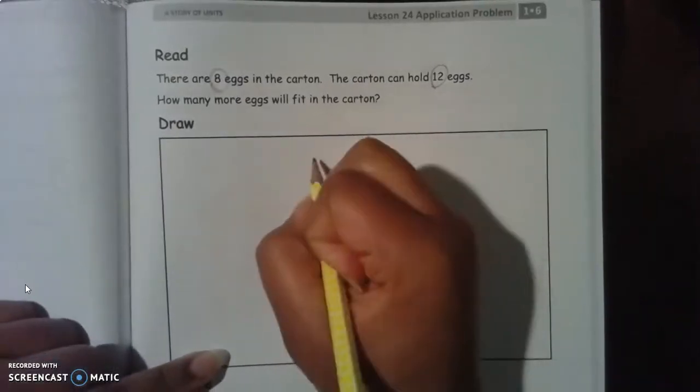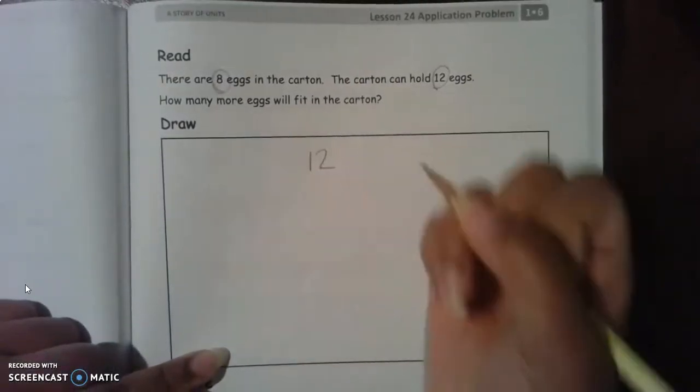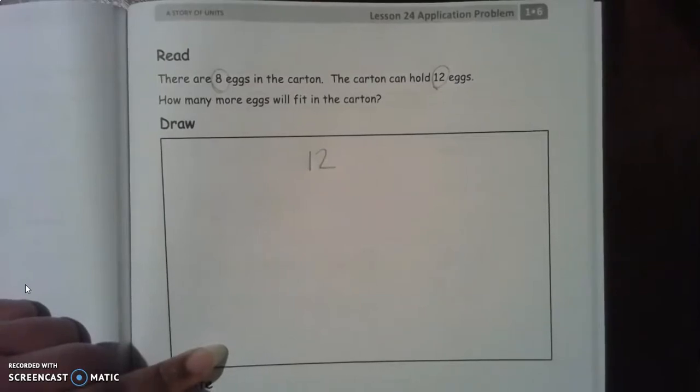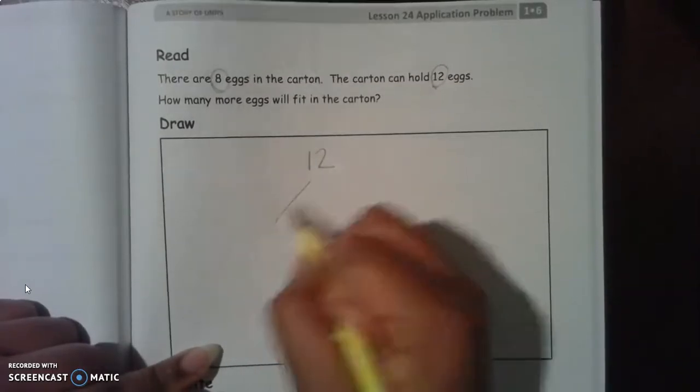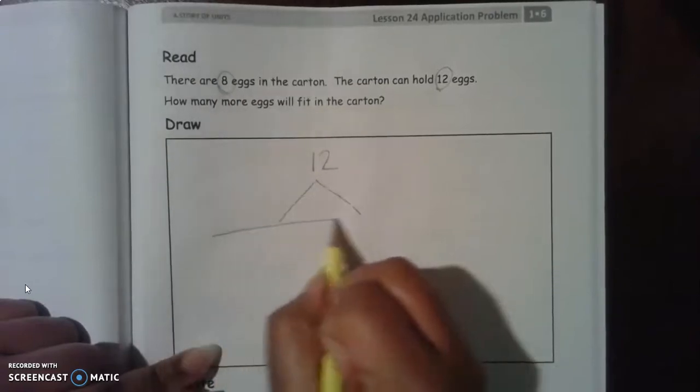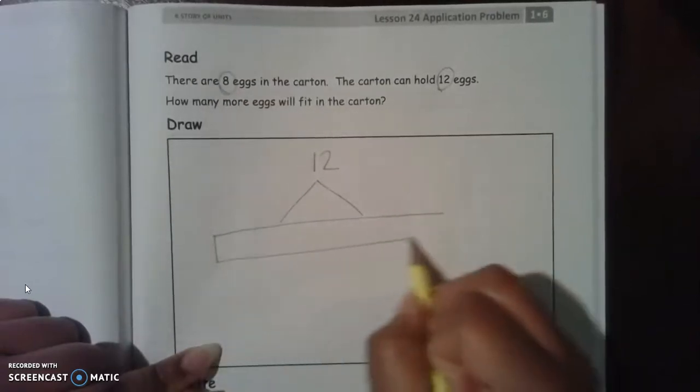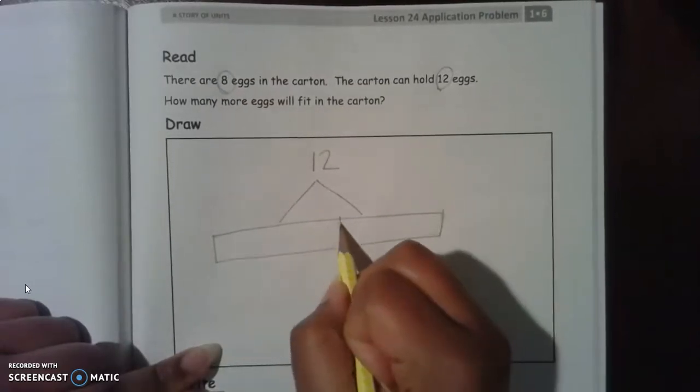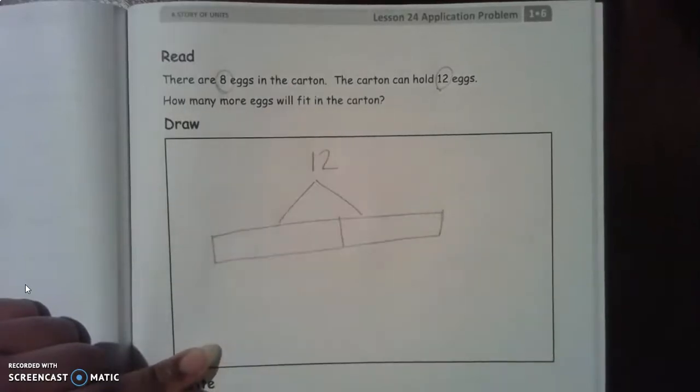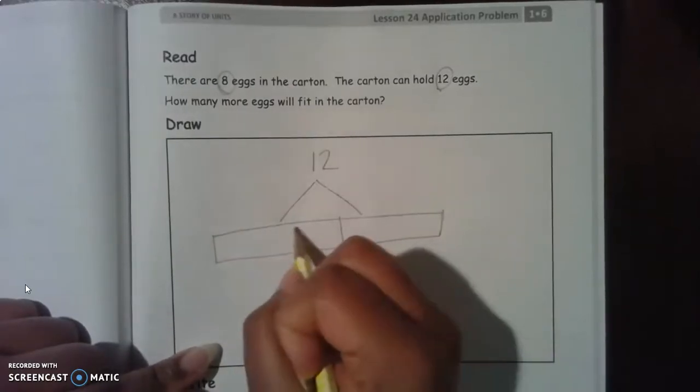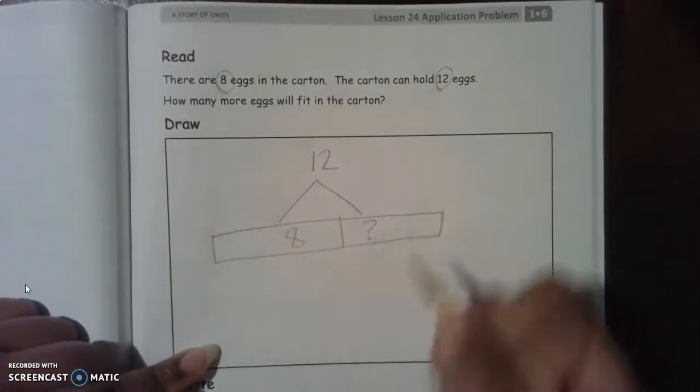So let's put 12 as our total because we know we're trying to get to the number 12. Let's draw our tape diagram. So how many eggs do we already have in the carton? Eight. So then what is our missing number?